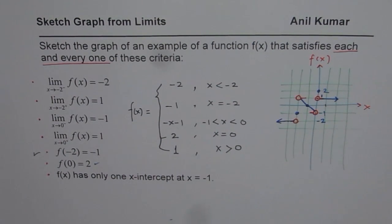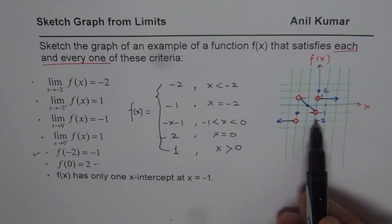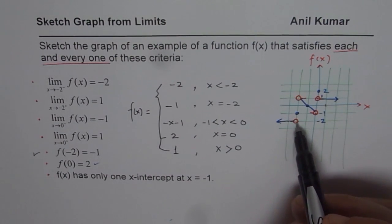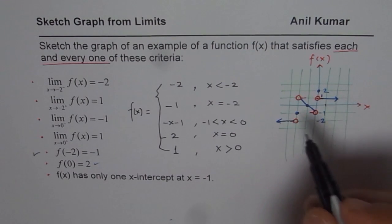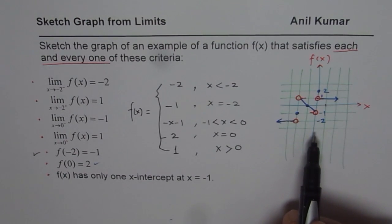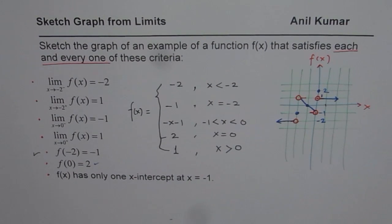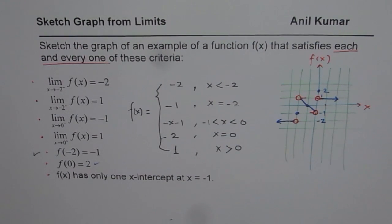Go through this once again to understand the concept — it is very critical. If you do a vertical line test, you will see that at each and every point the vertical line test passes, confirming it is a function. Note that there could be more than one valid solution; for example, you could have drawn curved lines instead. This is probably the simplest example satisfying all the conditions. Go through my other videos on sketching graphs from limits to get the basic concepts, and try questions from your book to be ready for your test. Thank you and all the best.